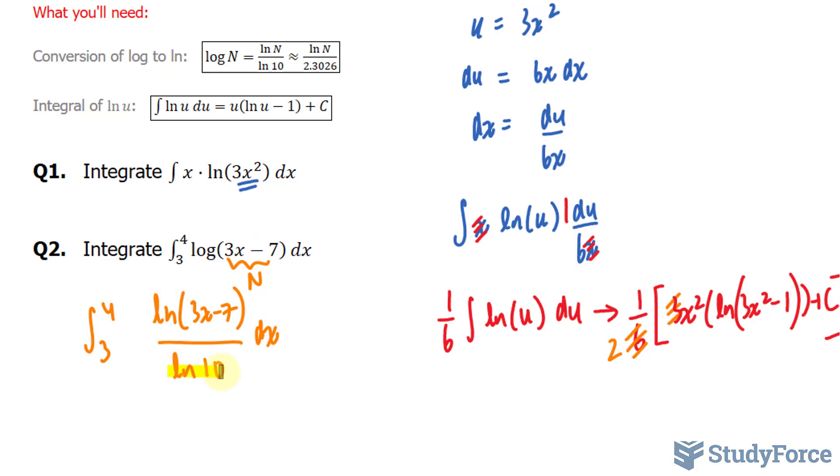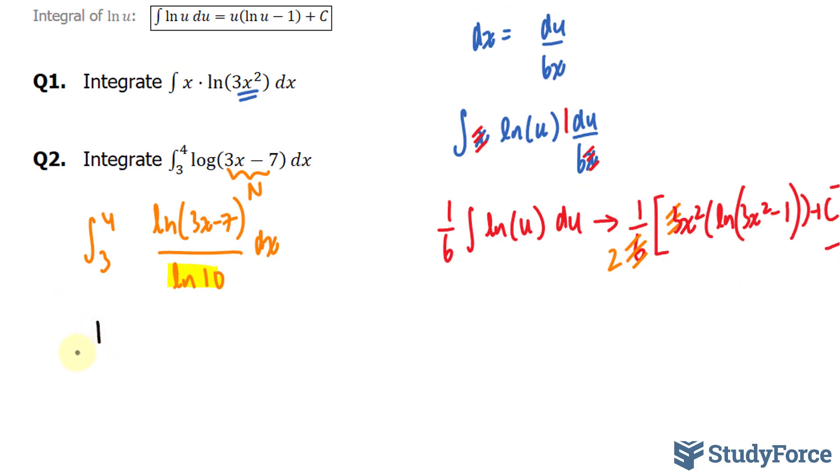So we have the integral between 3 and 4. I'll convert this, where this is technically my n. ln 10, so I have ln of 3x minus 7 over ln 10 dx.